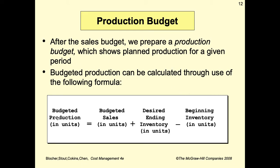Budgeted production in units equals budgeted sales in units, plus desired ending inventory in units, minus beginning inventory in units.